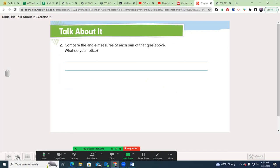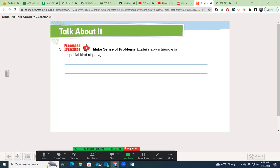So let's look at the talk about it. Think to yourself for a moment. Compare the angle measures of each pair of triangles above. What do you notice? Well, let's see if you notice that pair A have one right angle so it's a right triangle, pair B one obtuse angle so it's an obtuse triangle, and pair C all acute angles so it's an acute triangle. Explain how a triangle is a special type of polygon. It's special in that it's specifically three line segments that do not cross each other. If it was four it would be a quadrilateral.